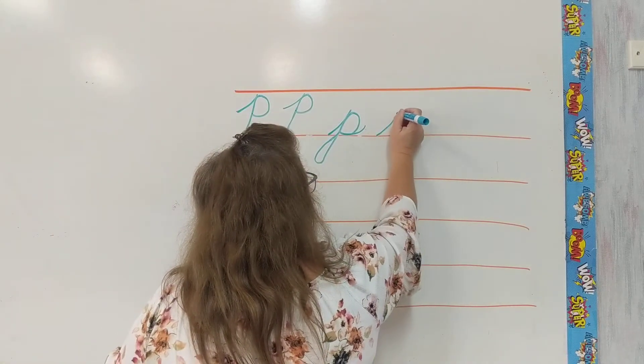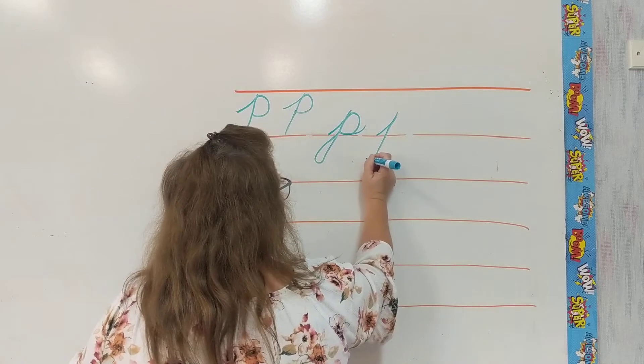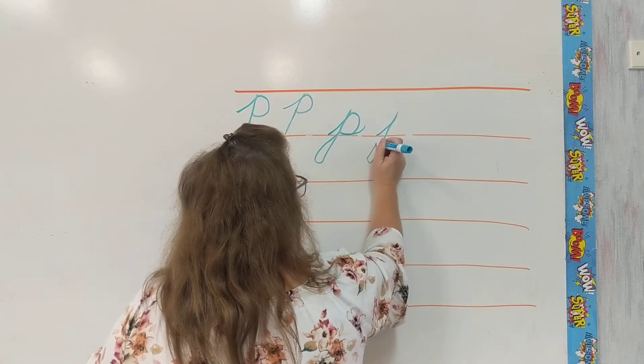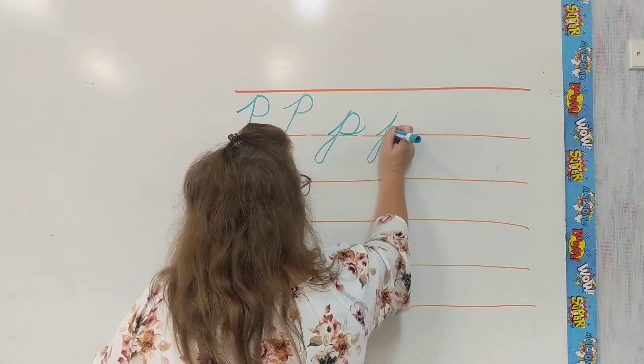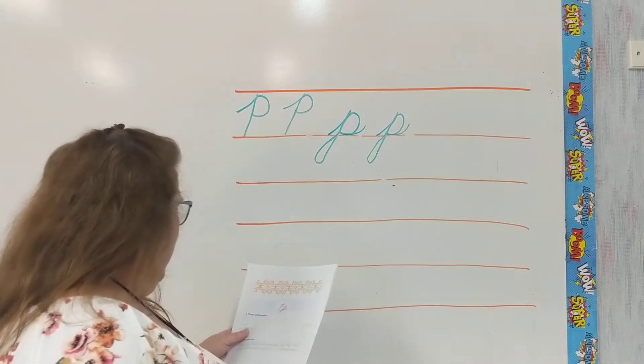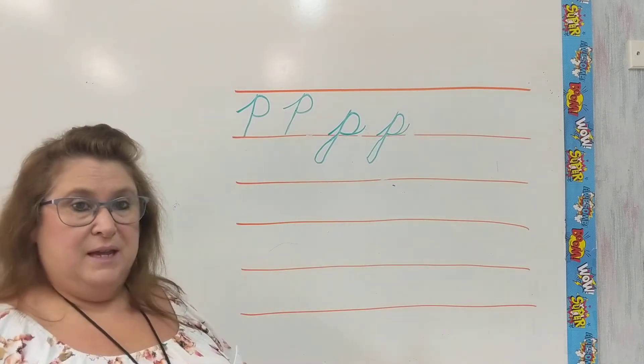You can watch one more time. When you come down, we're going to loop around to the back and when you get back to the line, you're going to trace up and close it up with a circle. And that is our lowercase P.